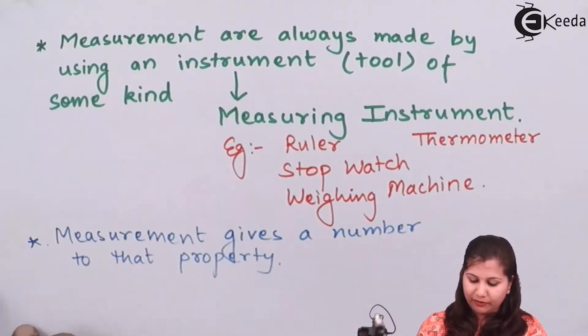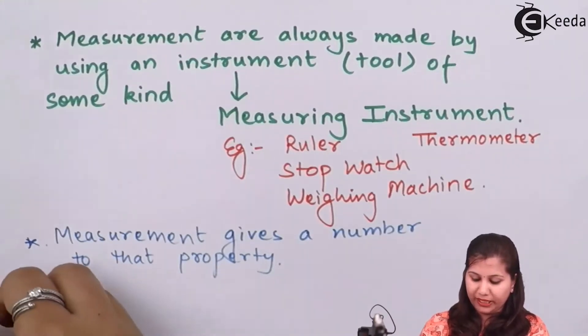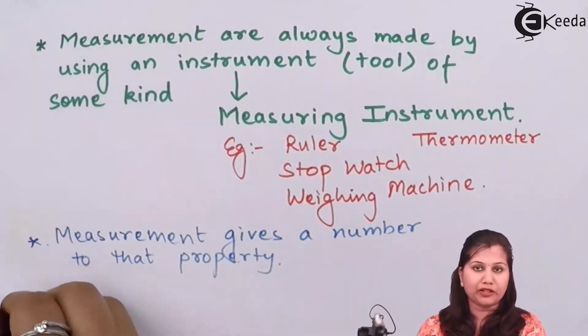Whenever we do any type of measurement, we get a result. When we measure a property using a measuring instrument, that instrument gives us a result. Whenever we express the result of a measurement, it will contain two parts: one is the number, and the second is the unit of measurement.